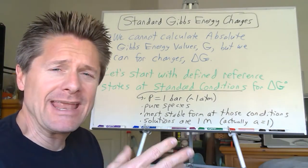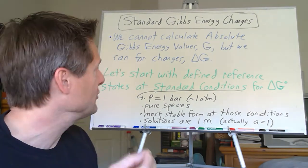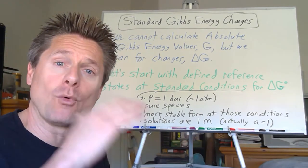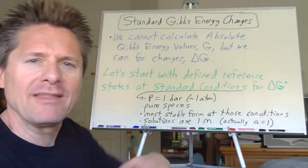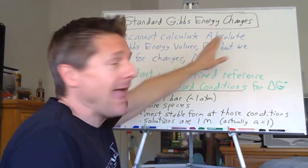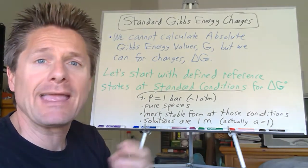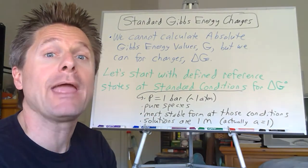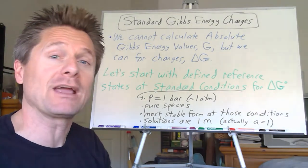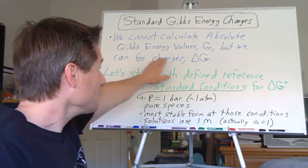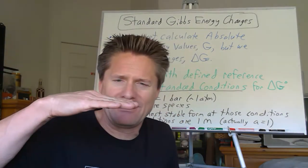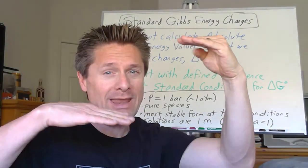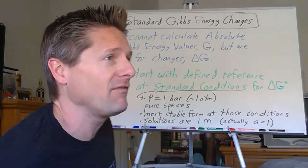We can calculate delta G at any temperature, but if we're at standard conditions, we can use a shortcut and use the values in the appendix. They're pretty limited — they don't have everything. We cannot calculate absolute Gibbs energy values, just like we can't calculate absolute enthalpy or internal energies. We can calculate absolute entropies because of the third law of thermodynamics. We can calculate delta G — the difference between states — because it's a path-independent state function.